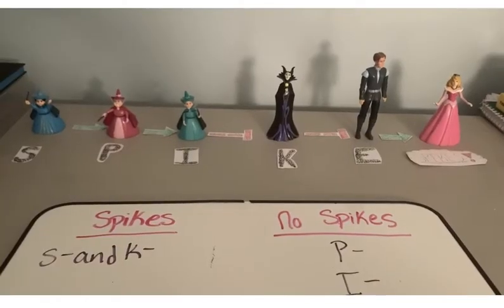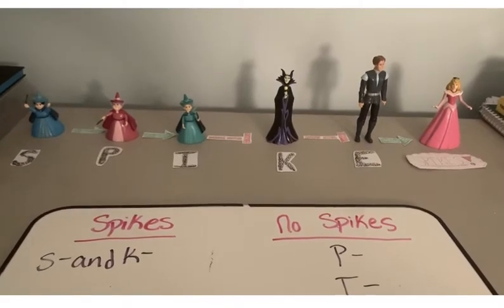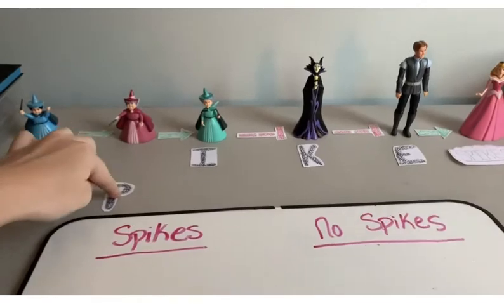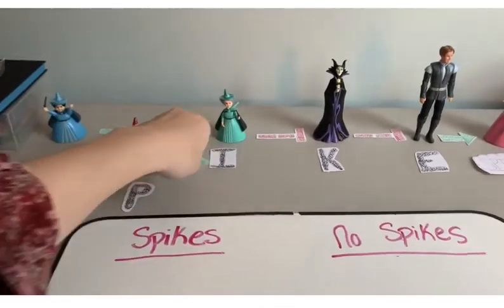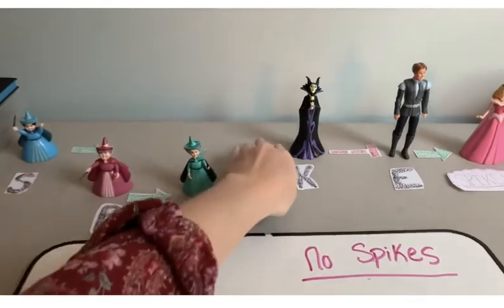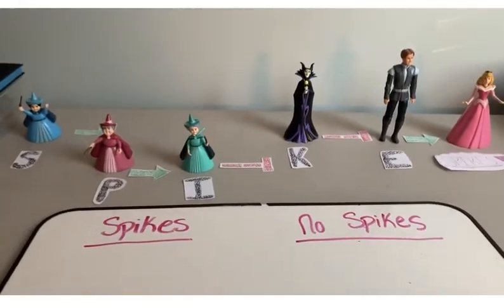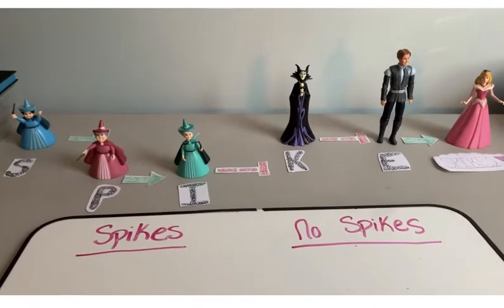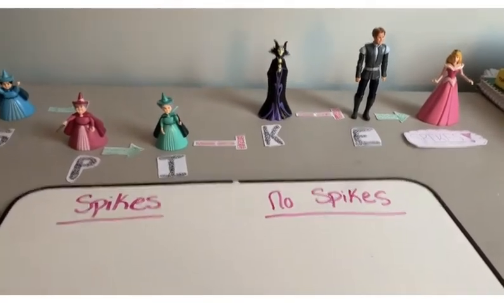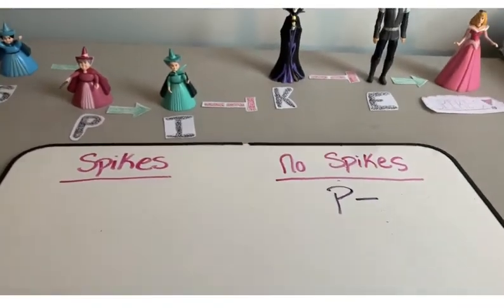So Prince Charming is able to stimulate Princess Aurora to make spikes. This isn't always the case — sometimes there's a mutant strand. For example, if there was a mutant P, P would be removed, not able to stimulate I or the green fairy, so she would not be able to inhibit Maleficent. So Maleficent would inhibit Prince Charming, and he would not be able to stimulate Aurora, and there would be no spikes. So we write P minus in the no spikes column.